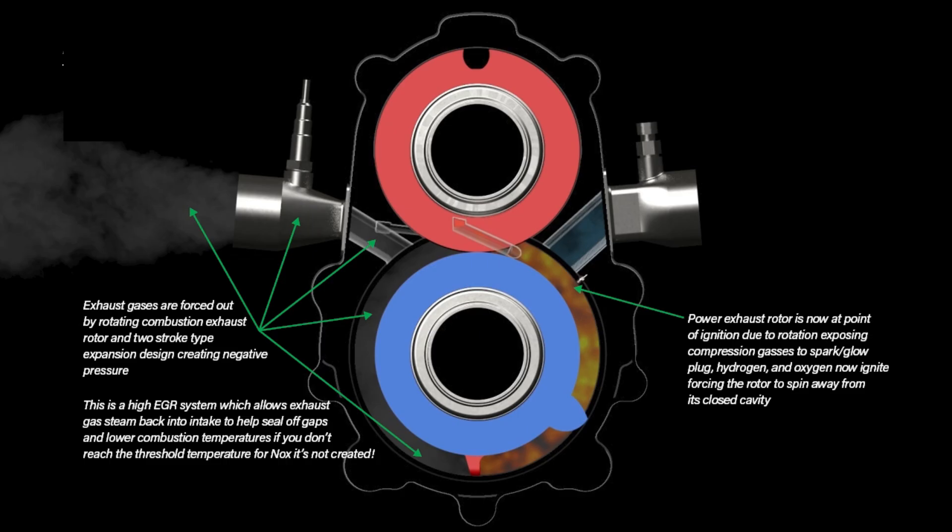Exhaust gases are forced out by rotating combustion exhaust rotor and two-stroke-type expansion design, creating negative pressure. This is a high EGR system which allows exhaust gas steam back into intake to help seal off gaps and lower combustion temperatures. If you don't reach the threshold temperature for NOx, it's not created.